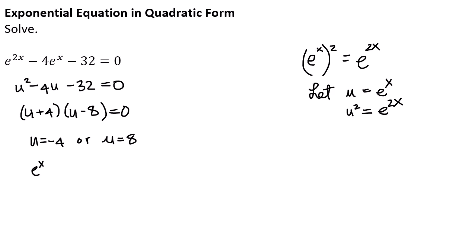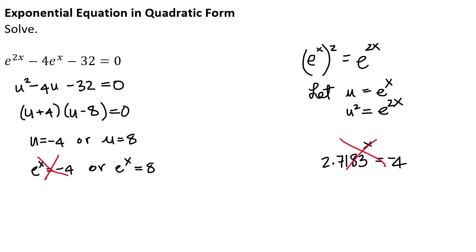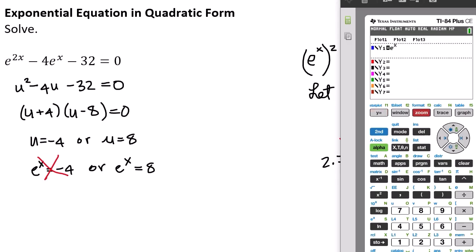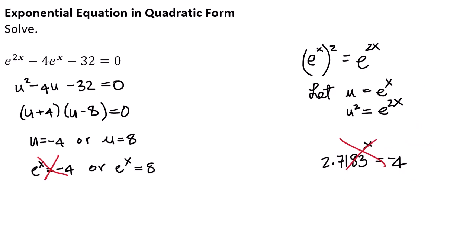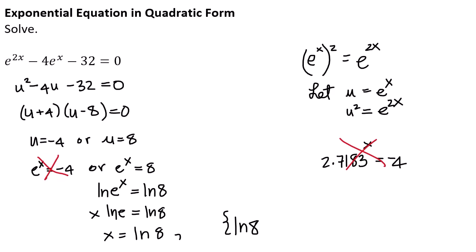That means either u equals negative 4 or u equals positive 8. But u is e to the x, so e to the x equals negative 4 or e to the x equals 8. It is not possible to raise e (approximately 2.7183) to any power and get a negative number — e to the x never goes below the x-axis. So the only possible solution is e to the x equals 8. Taking the natural log of both sides: x times ln e equals ln 8, and since ln e equals 1, x equals ln 8. The solution set is {ln 8}.